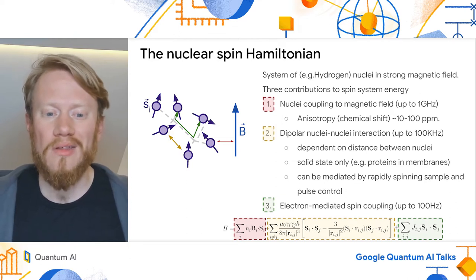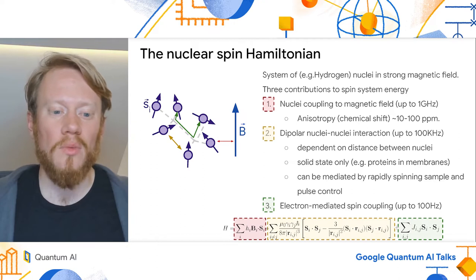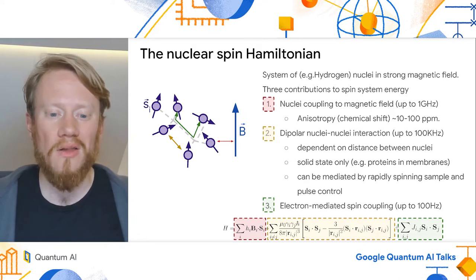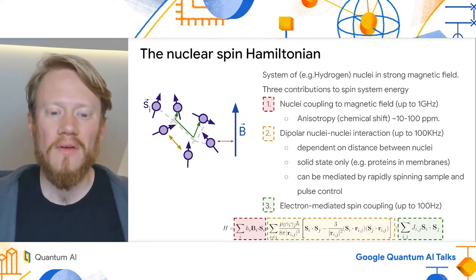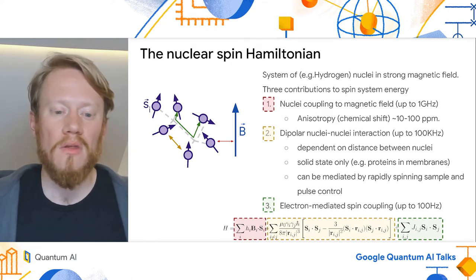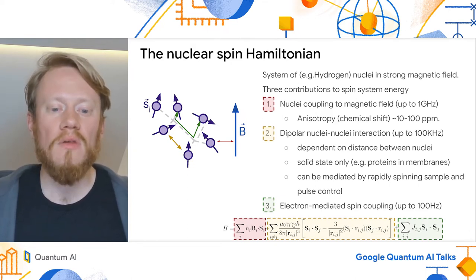These spins experience three main contributions to their energy. The strongest is typically the interaction with the external field, which in an NMR spectrometer can be up to several hundred megahertz. The second largest is a direct dipole-dipole spin interaction, which for protons can be tens of kilohertz, and the third largest is a coupling of nuclear spins via intermediary electrons, which is on the order of Hertz.